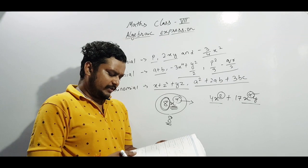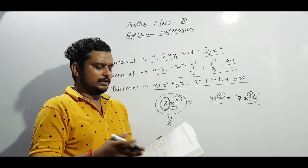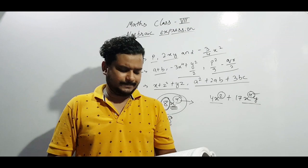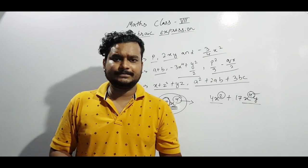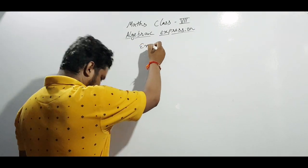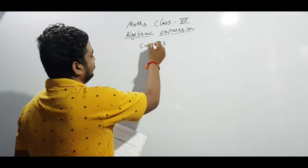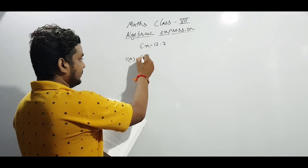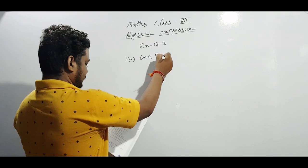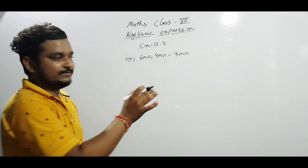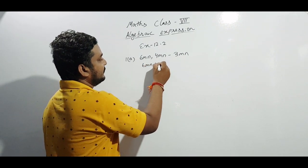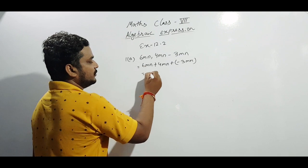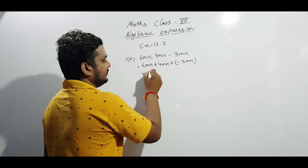You can solve the rest of the questions similarly. Now we will go to the second exercise, 12.2. In question 1 bit A, we are given 6mn, 4mn, and minus 3mn. We have to add: 6mn plus 4mn plus minus 3mn equals 6 plus 4 minus 3, which is 7mn.